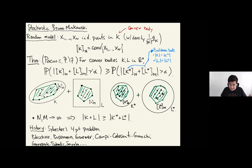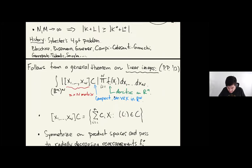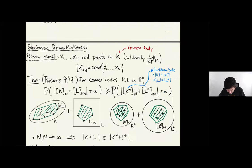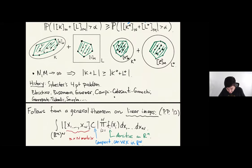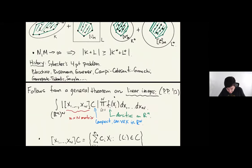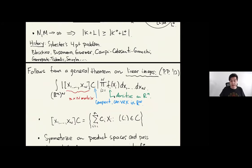This is motivated by geometric probability and Sylvester's four-point problem. This stochastic result follows from previous work with Gregoris Paouris. There's a general result about multiple integral rearrangement inequalities, involving linear images of convex sets under certain random matrices. The vectors are sampled independently according to some densities — they can be uniform measures on convex bodies, or other things — but fundamentally I'm taking an image of a convex set.